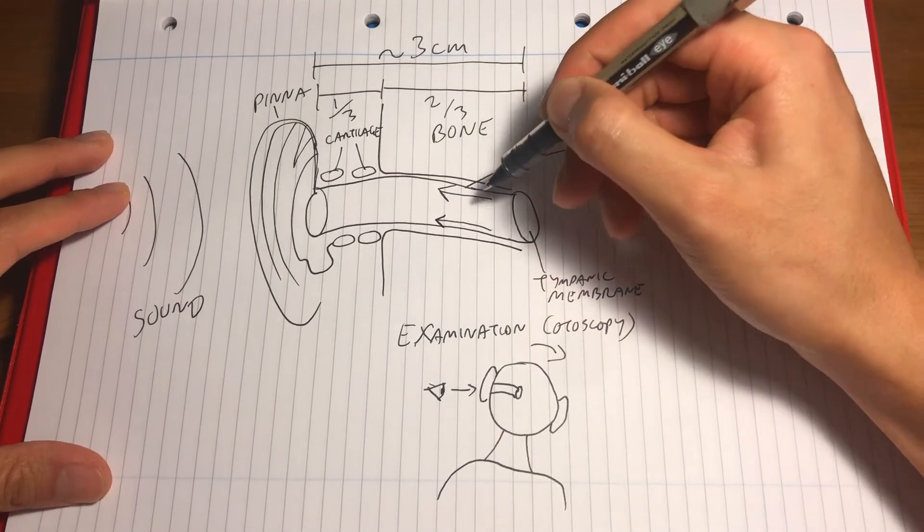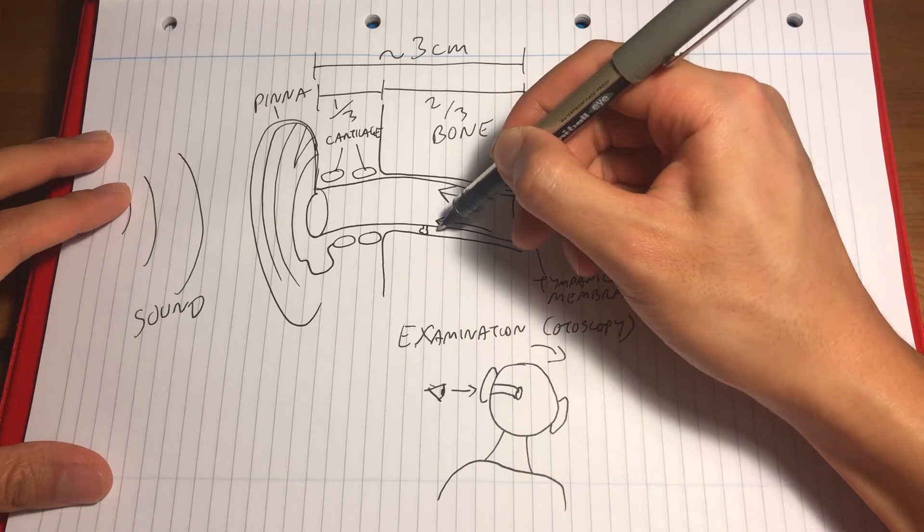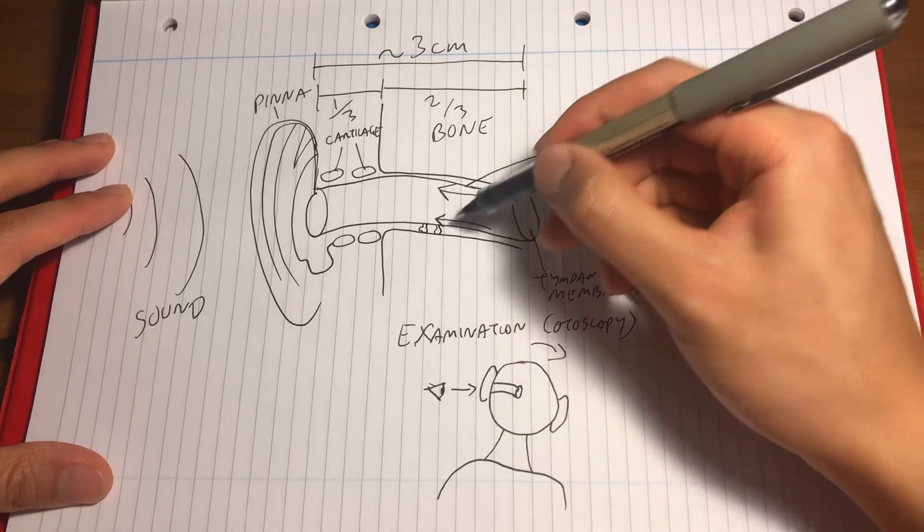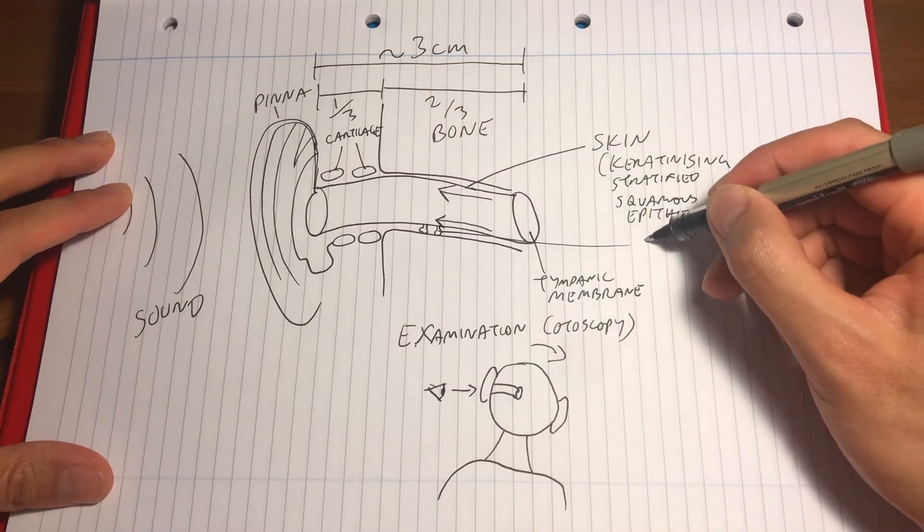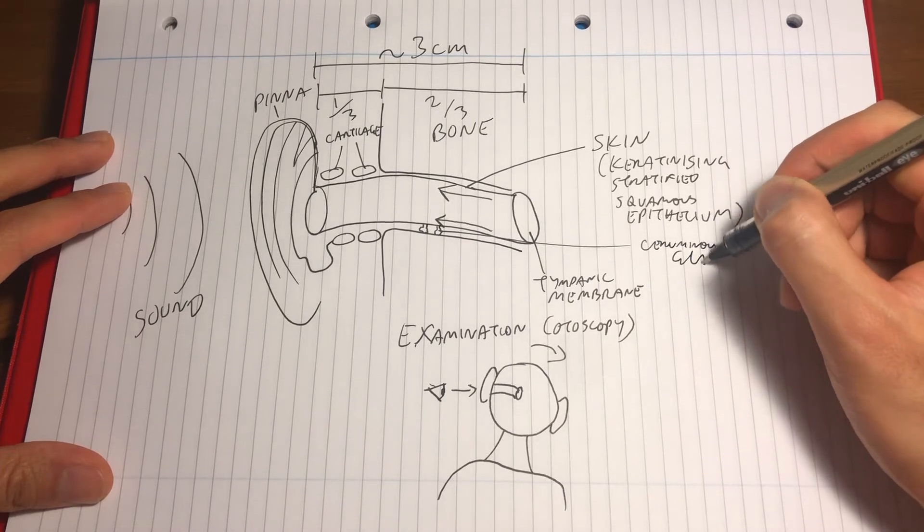Inside the skin, there are both sebaceous and ceruminous glands, which are essentially apocrine glands, and these produce what we call earwax.